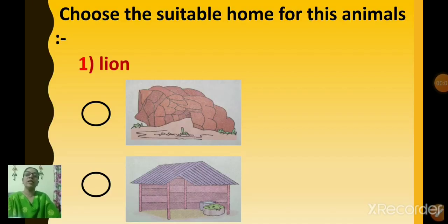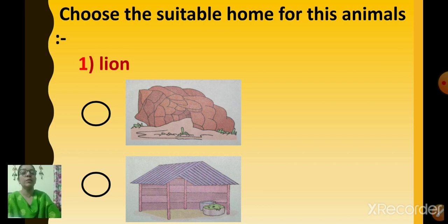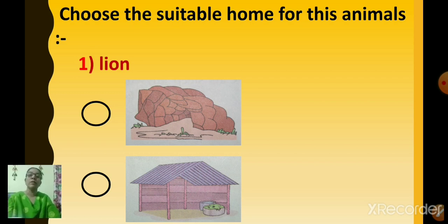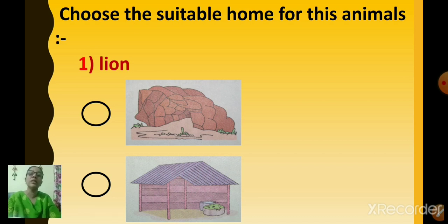Now, see the head question: Choose the suitable home for these animals. The animal's name is given and the picture of the home of that animal is given. Two options are given — two homes of the animals are given — and you have to select which is the correct home for the given animal.